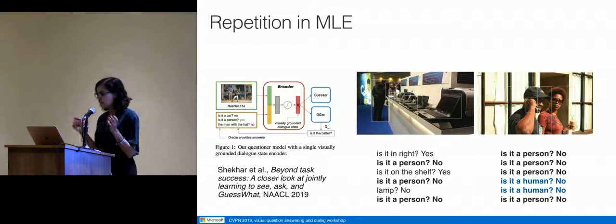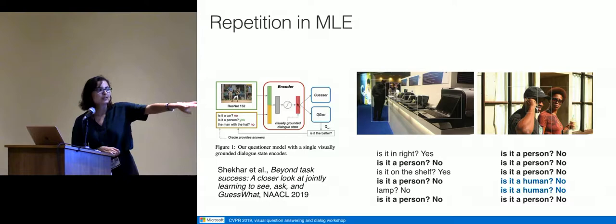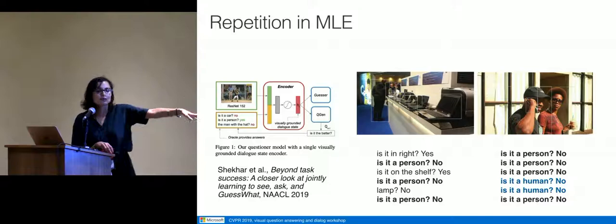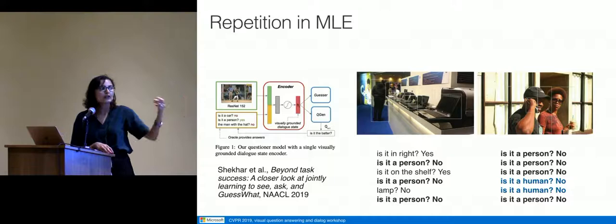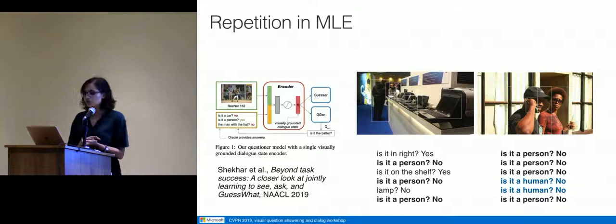To loop back to visual dialogue: if you've ever trained a model for visual dialogue, you get this devastating experience where the model just repeats itself all the time. For example, it asks 'Is it a person?' gets 'No,' and then asks again — something you'd never see in training data because you'd move on. Our working hypothesis is that this is probably due to state aliasing to some effect, and we're running further experiments to address this in visual dialogue. We believe this is applicable to any kind of dialogue modeling task.